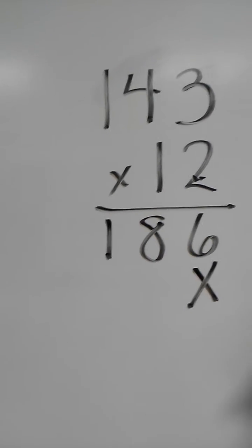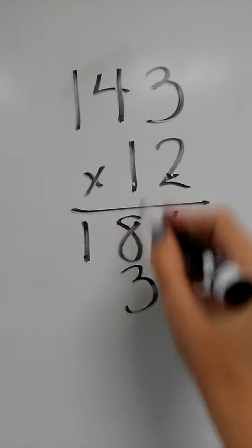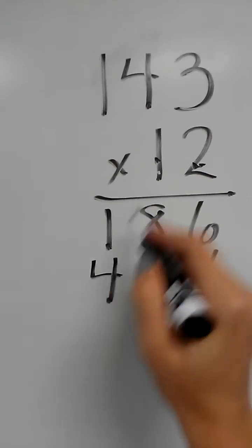Now I'm blocking off my ones place because I'm multiplying from the tens place. 1 times 3 is 3, 1 times 4, 1 times 1.